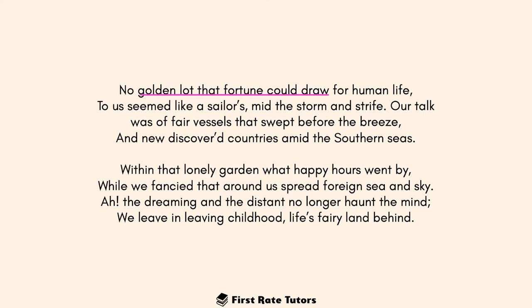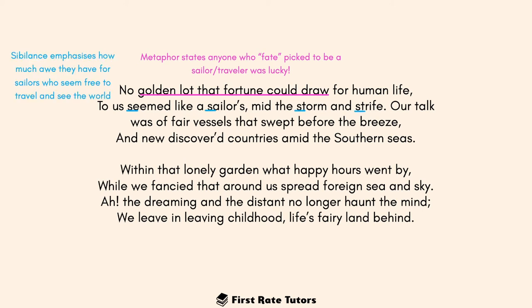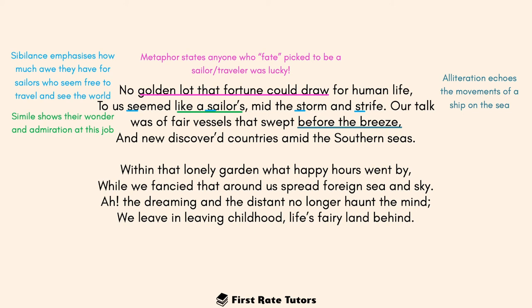In the following verse, 'no golden lot that fortune could draw' is a metaphor stating that anyone fated to be a sailor or traveler was really lucky. The sibilance in 'seen,' 'sailors,' 'storm,' and 'strife' emphasizes their admiration for sailors who seem free to travel and see the world. The simile 'like a sailor's' shows their wonder and admiration at Captain Cook's profession. The alliteration of 'b' in 'before the breeze' is a plosive sound that echoes the movement of a ship on the sea.